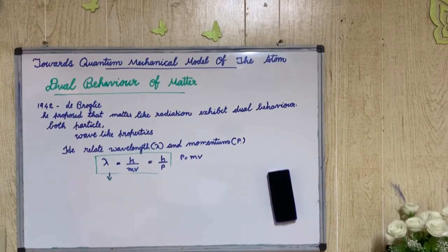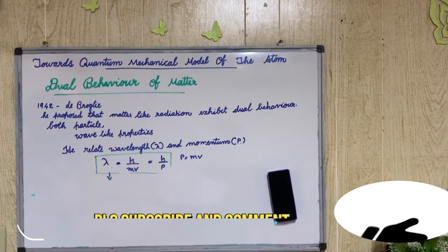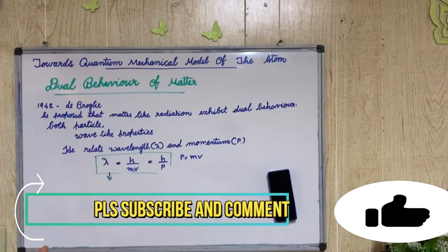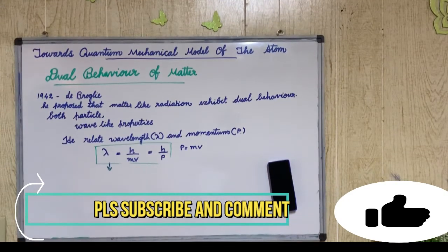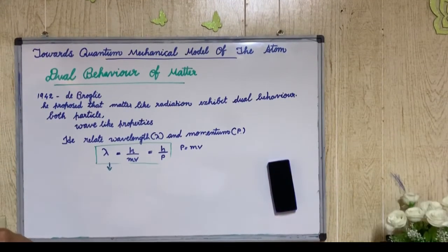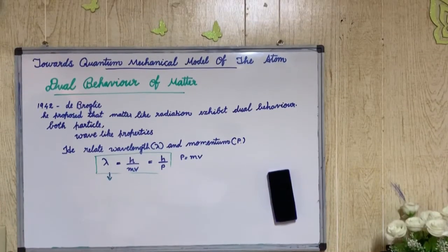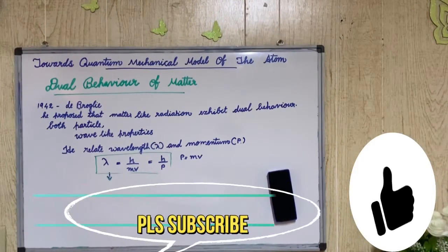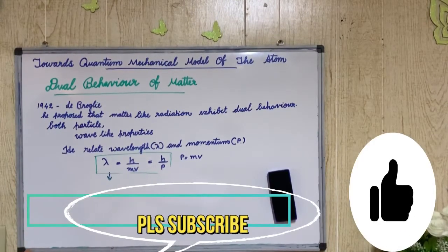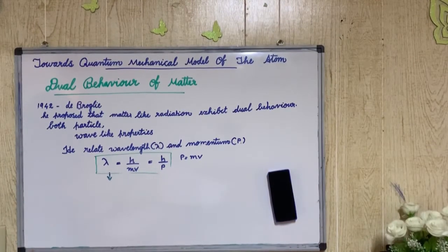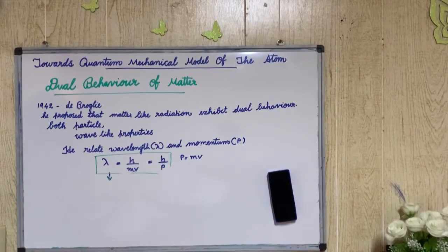Hello everyone, welcome to our topic: Dual Behavior of Matter and the de Broglie Equation. In this video, we will talk about the quantum mechanical model of atoms and its drawbacks. The two main topics are: first, Dual Behavior of Matter and the de Broglie Equation, and next, the Heisenberg Uncertainty Principle.